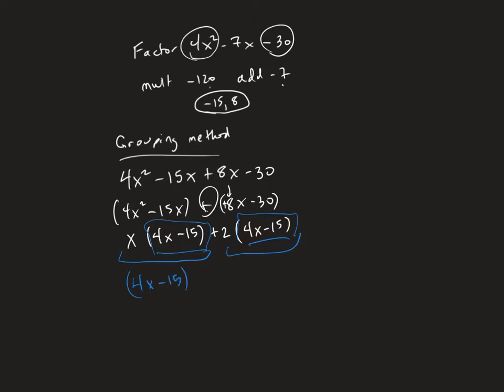And when I do that, what I'm left with from this first term is just the x that was sitting here. And from the second term, just this plus 2 that was sitting there. And so that is the factorization by the grouping method.